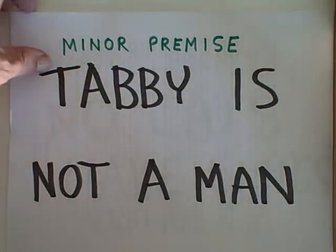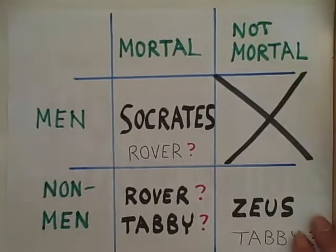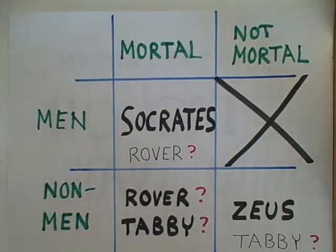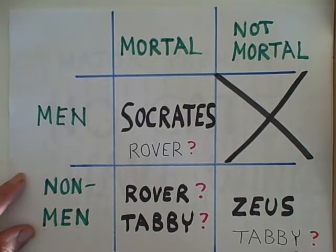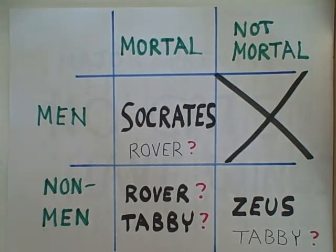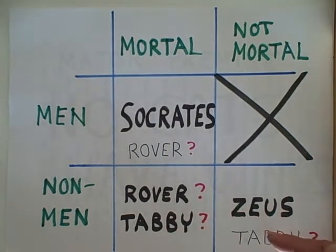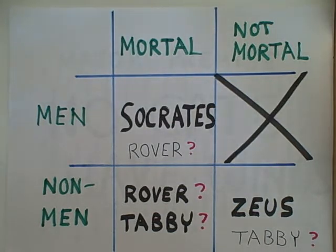Here's another minor premise that will not give us a valid conclusion: Tabby is not a man. We know that Tabby has to be in the non-men row, but we don't know whether to put Tabby in the mortal column or the non-mortal column. If Tabby is a cat, that's a mortal being, but if Tabby is another Greek deity along with Zeus, Tabby would be in the non-mortal column.